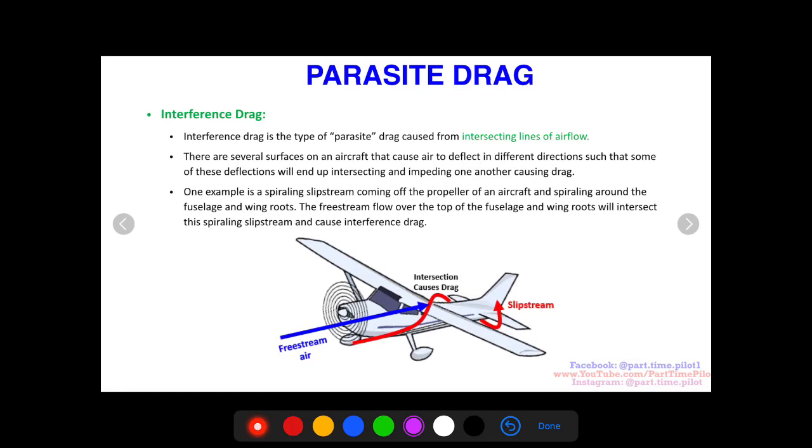I'll try and explain this in a picture here. The spiraling slipstream coming off a propeller, you have air streaming off like this and it can go around an aircraft. Then you have freestream air meanwhile coming right over the wings, and these two can intersect. This spiraling slipstream from the propeller can basically interfere with this freestream air and disrupt the flow of that air.